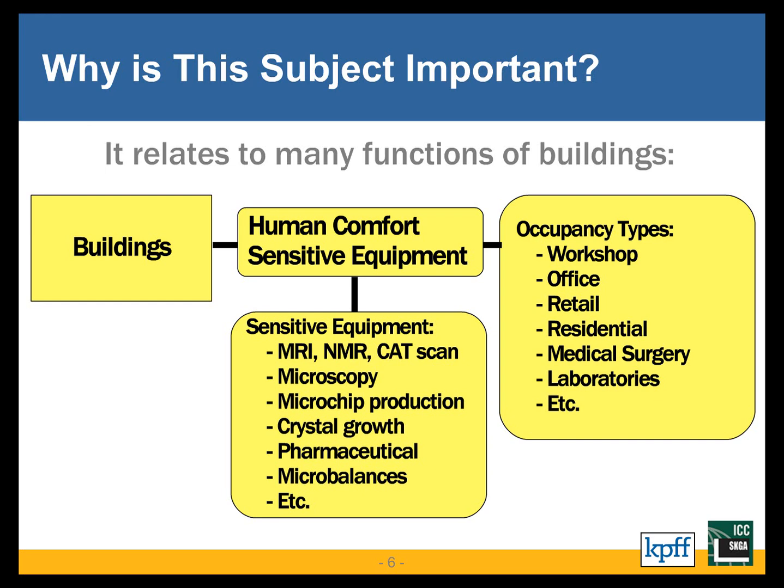It's important to distinguish between vibrations that matter for human comfort and those relevant to sensitive equipment. Beginning with human comfort, there are various occupancy classes. The most tolerant class would be a workshop, where you might expect floor vibrations due to industrial activity. There are still limits related to human comfort and cognitive functioning in very high vibration environments.